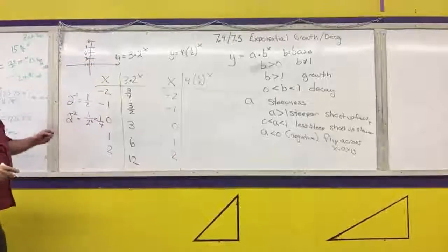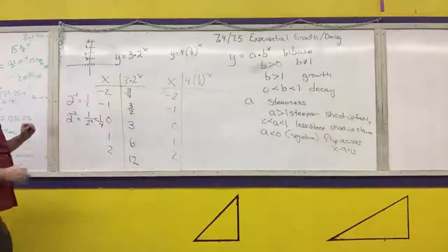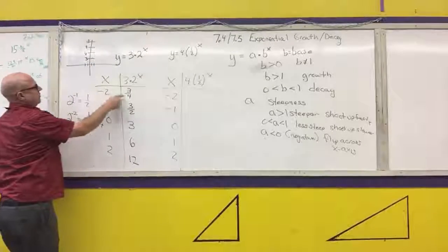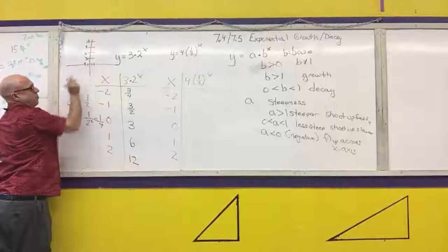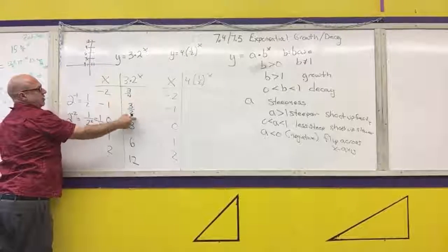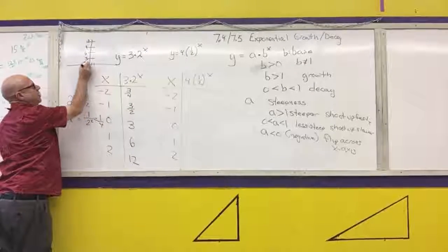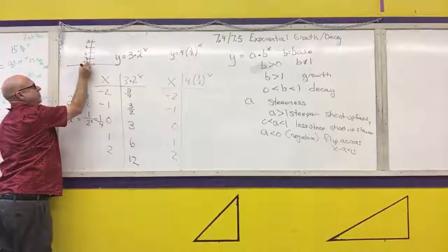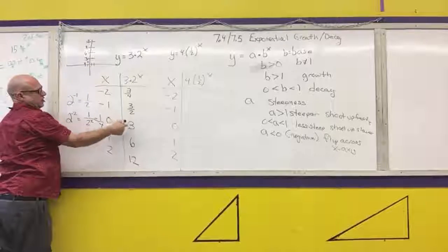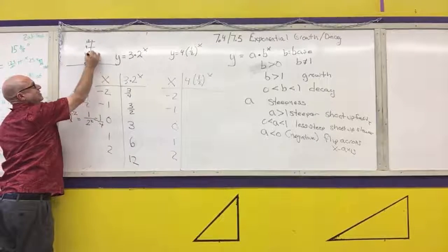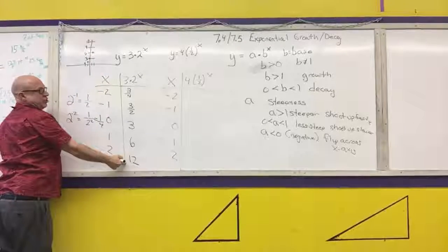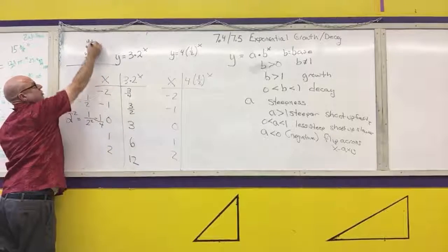To keep it close to scale: if I put negative 2 in, I get three-quarters; negative 2, three-quarters. Negative 1, one and a half. Zero, I get 3. One, I get 6. And two, I get 12.